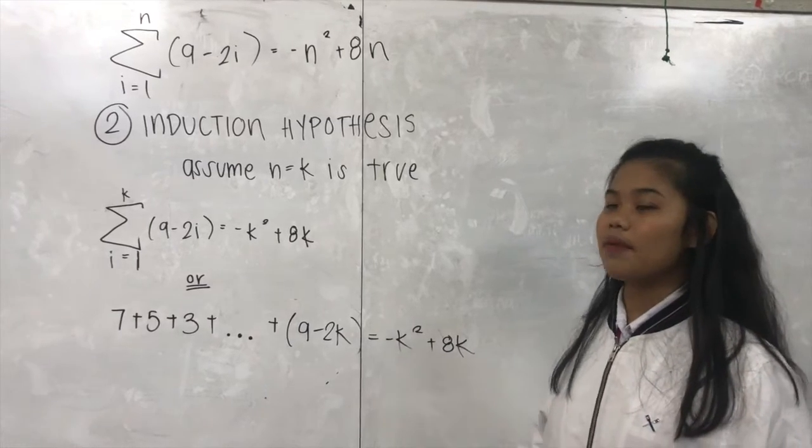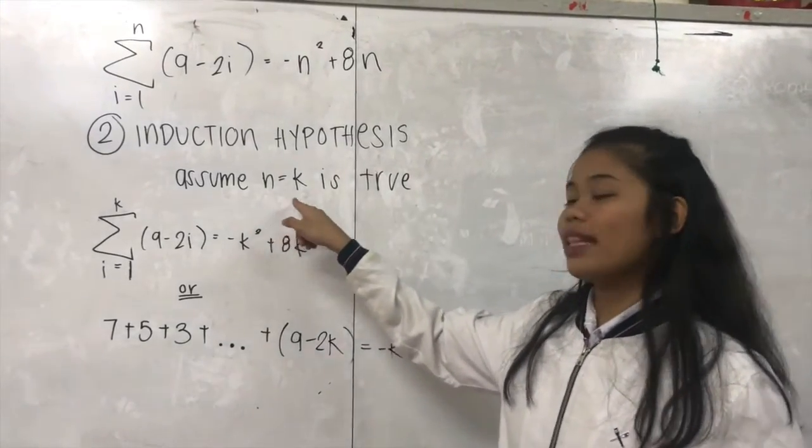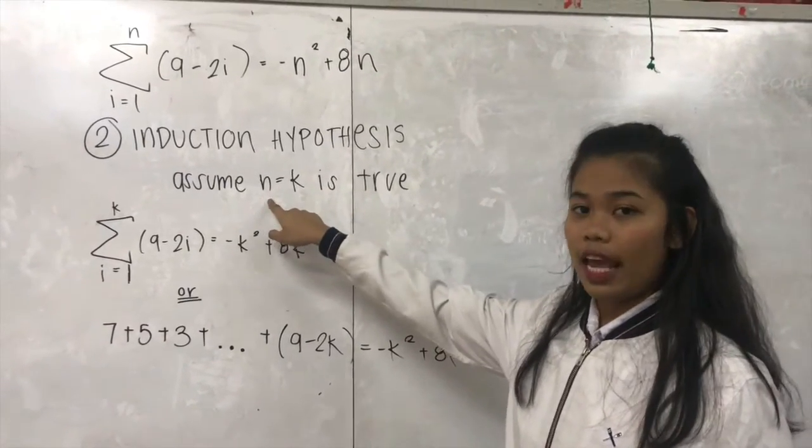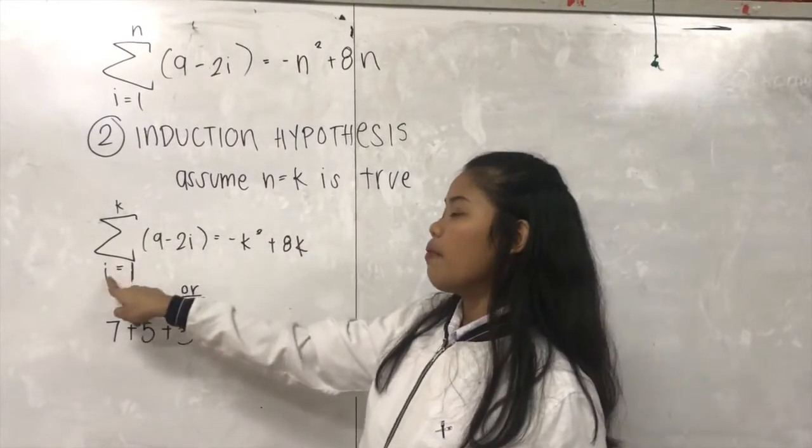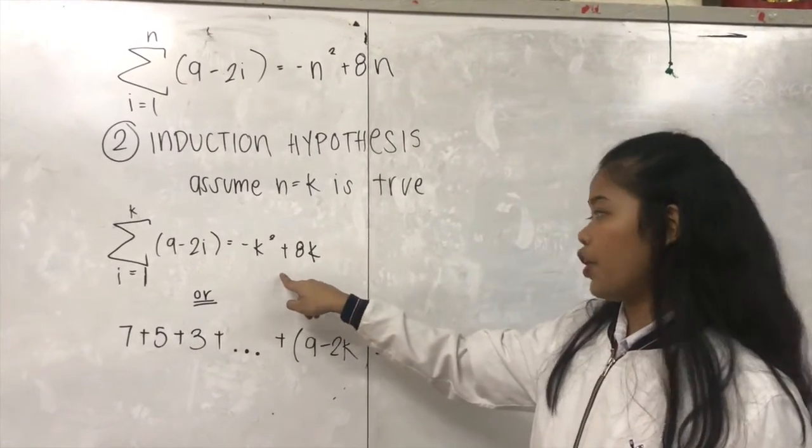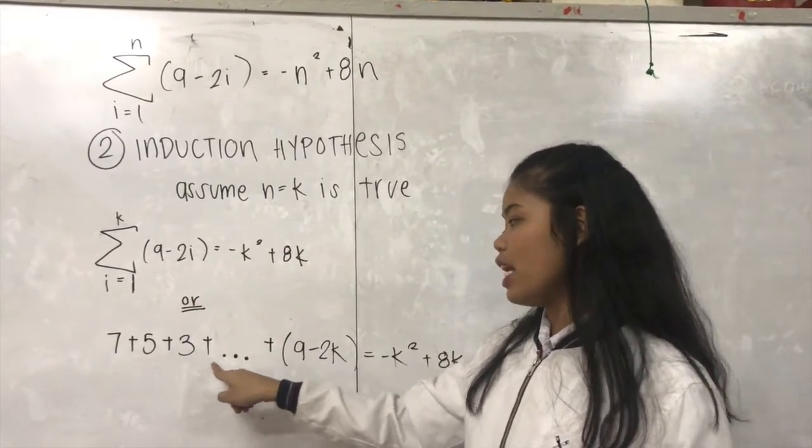So, the next step is the induction hypothesis. We need to assume that N equals to K is true. So, we need to substitute this N into K. So, summation 9 minus 2i equals to negative K squared plus 8K or 7 plus 5 plus 3.